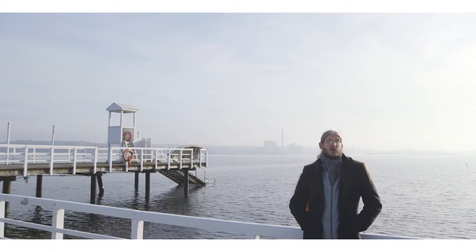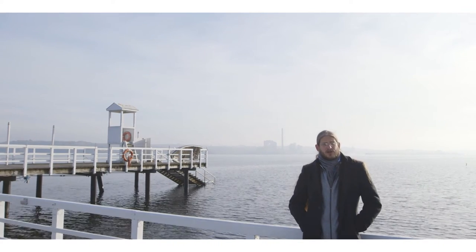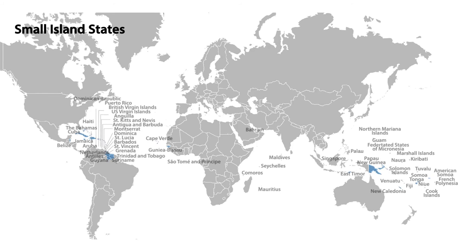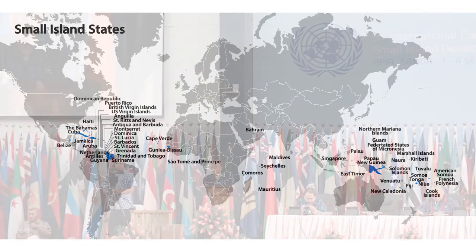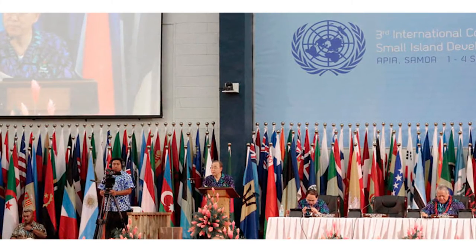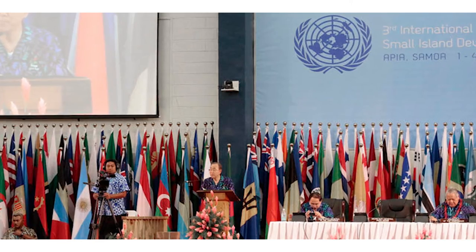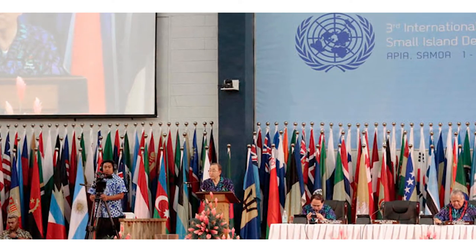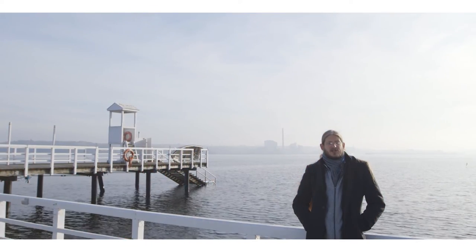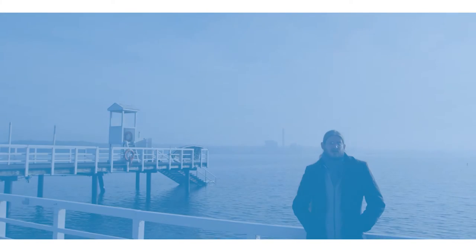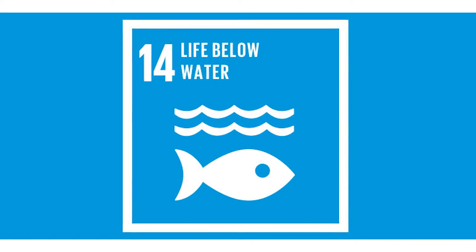The second example is a very global one. There are many small island developing states and very small coastal states that have formed an alliance — the Alliance of Small Island States — to have a voice in the UN system, to express their specific needs towards the ocean and in policy making. In 2014, the Year of Small Island Developing States, a conference engaged member states and other countries in discussions on specific needs of these small island states in relation to the ocean and climate change. That activity ultimately led to the establishment of a specific sustainable development goal for the ocean and coasts.